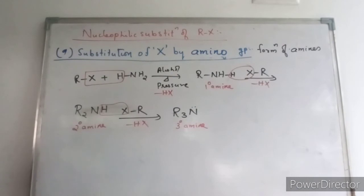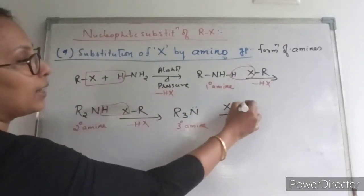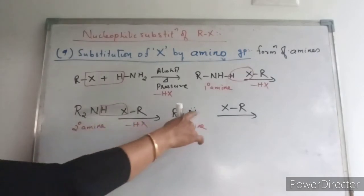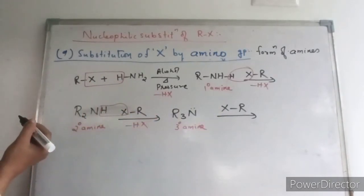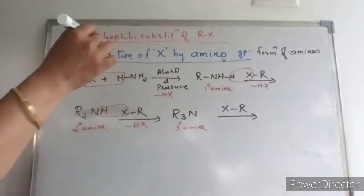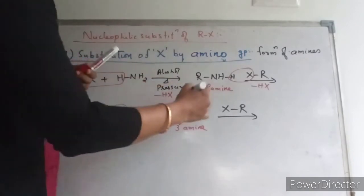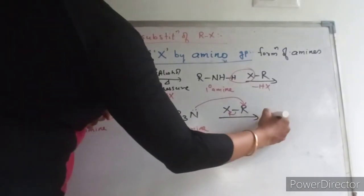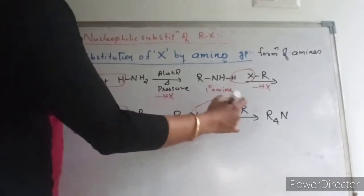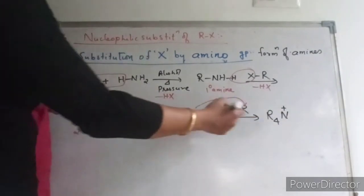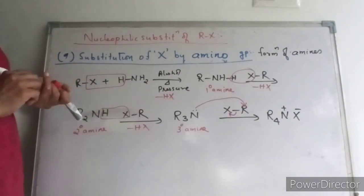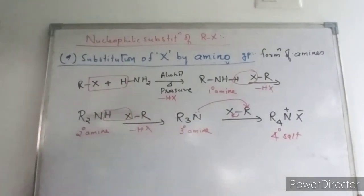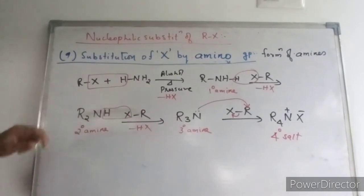Now the tertiary amine can also react with alkyl halide, but it will be an addition product. There is no HX to eliminate. The lone pair will be attacking the carbon of the alkyl halide, and X minus will leave but remain as a counter-anion, because this will be R4N+ with a positive charge on nitrogen. So you will be getting a quaternary ammonium salt.